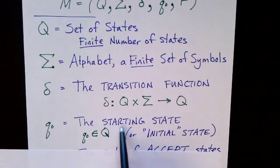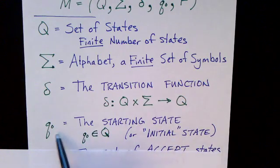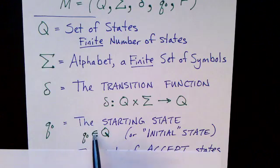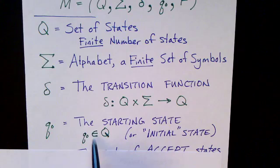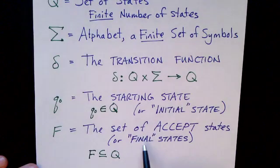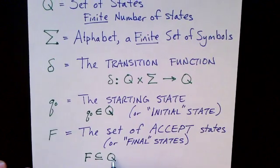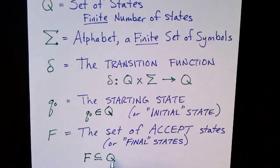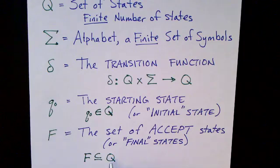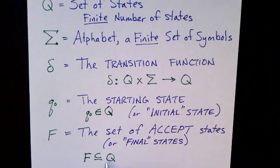We also need our starting state, sometimes called the initial state. We generally denote that with q sub zero, and this has to be one of the elements in our set Q. Finally, we need a set of accepting states, or final states, denoted F. This should be a subset of Q — typically a non-empty subset. Technically it can be empty, in which case the finite state machine accepts no strings, but typically there will be one or more final states.